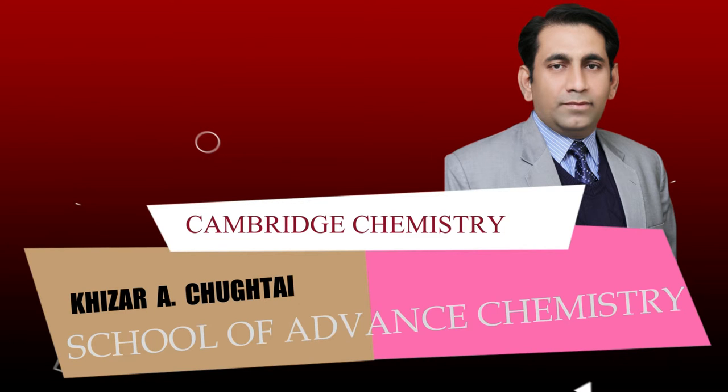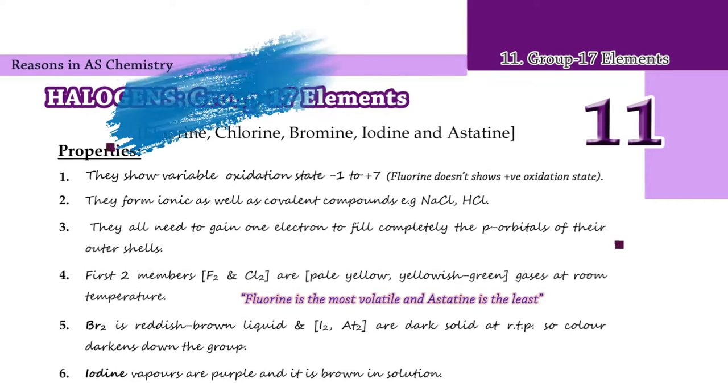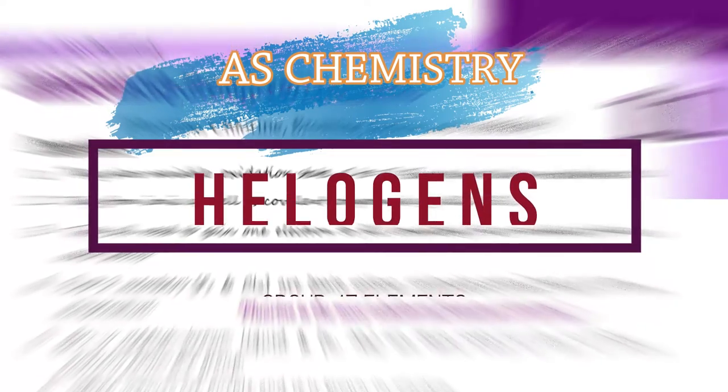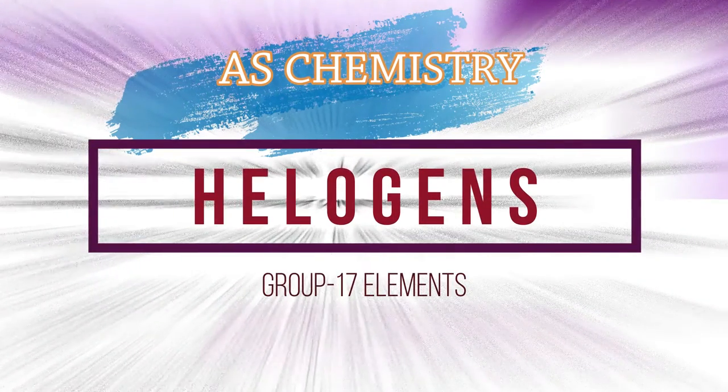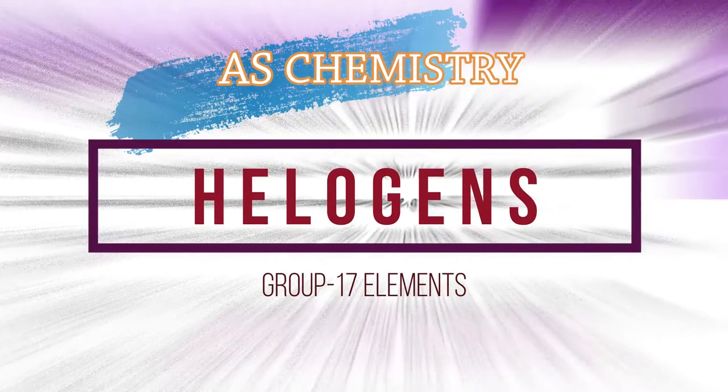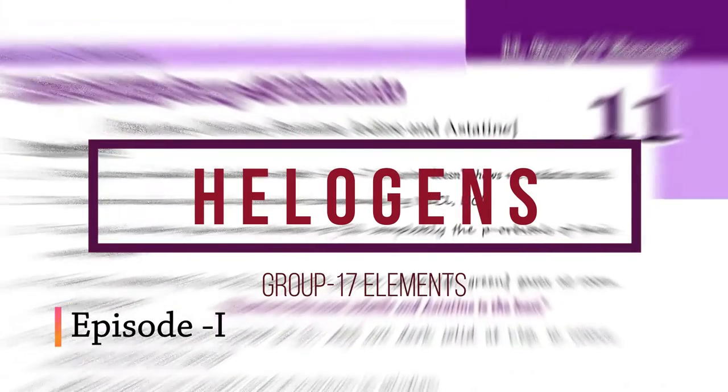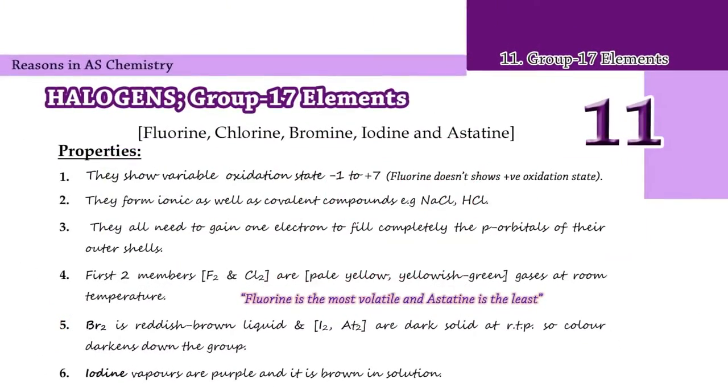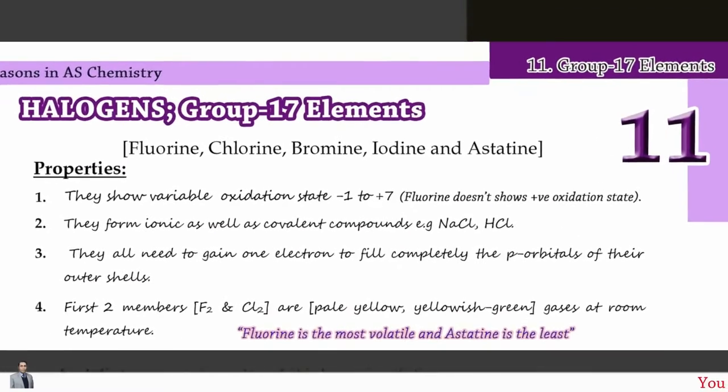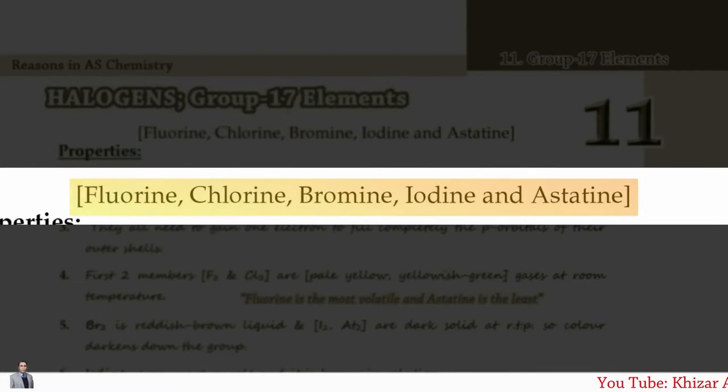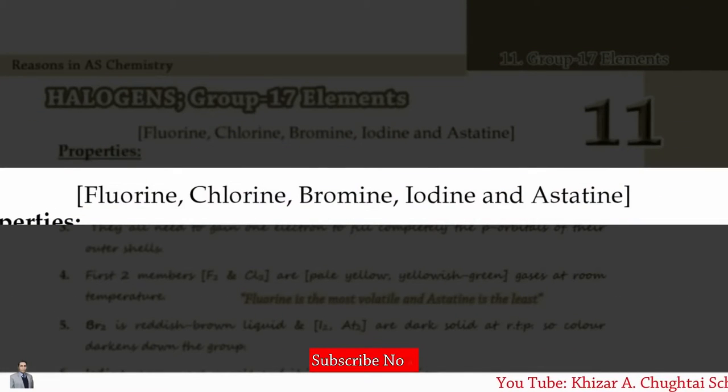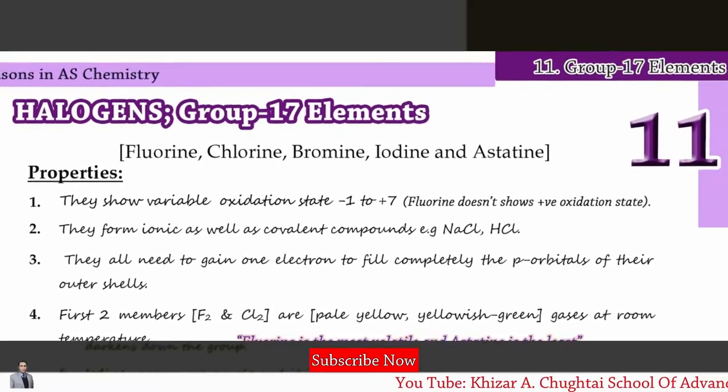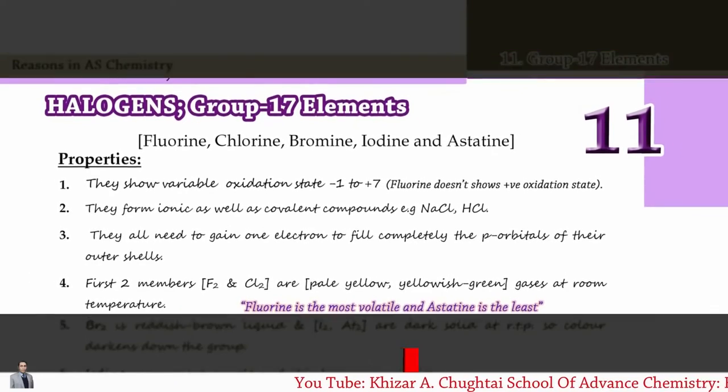Welcome to Khizr-e-Chukta School of Advanced Chemistry. Today we'll discuss halogens: Fluorine, Chlorine, Bromine, Iodine, and Astatine, which are the members of the halogen family. Now come towards their properties.